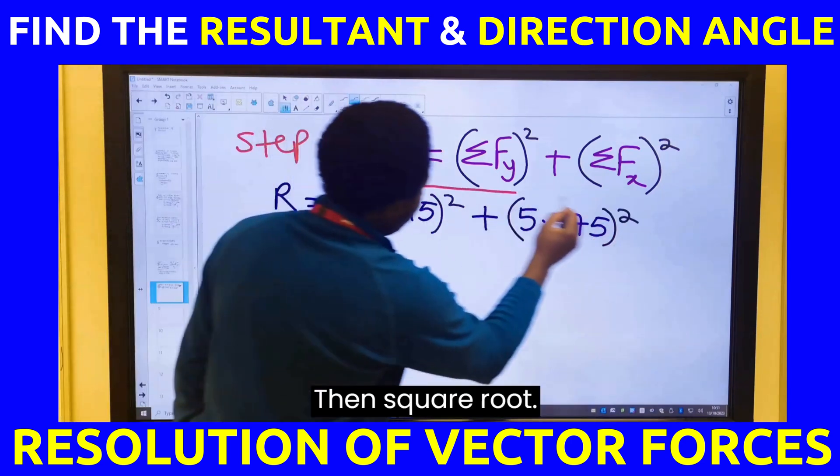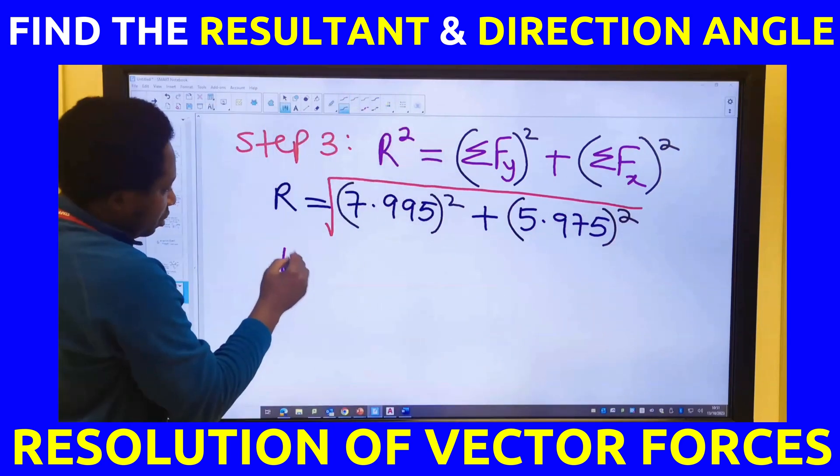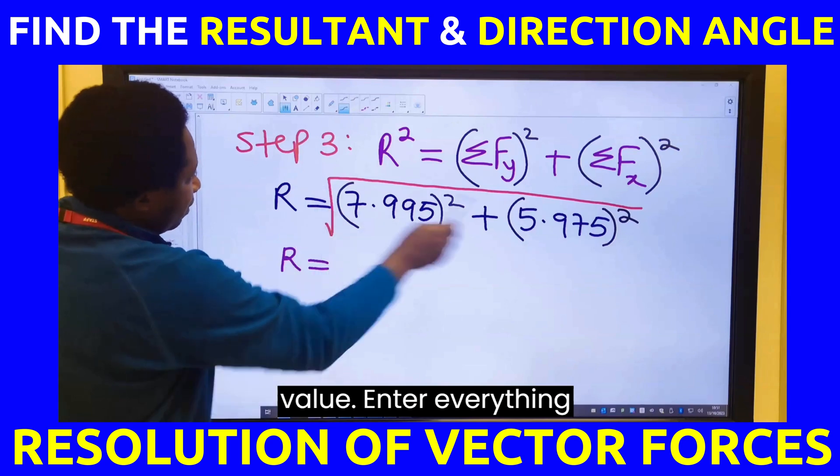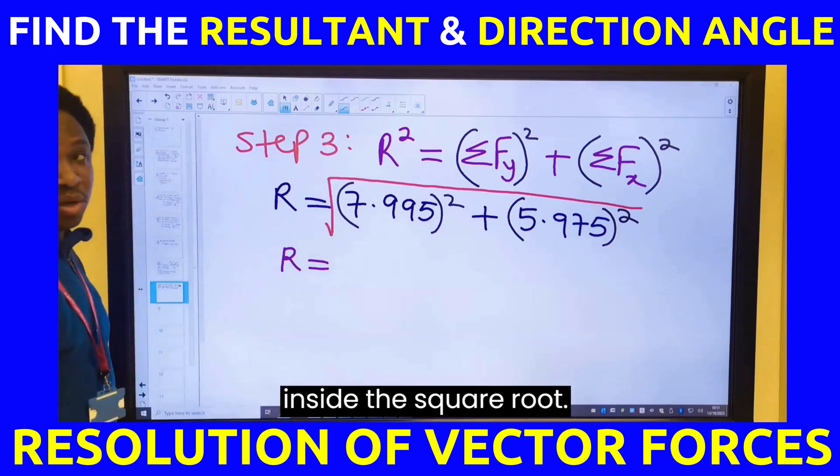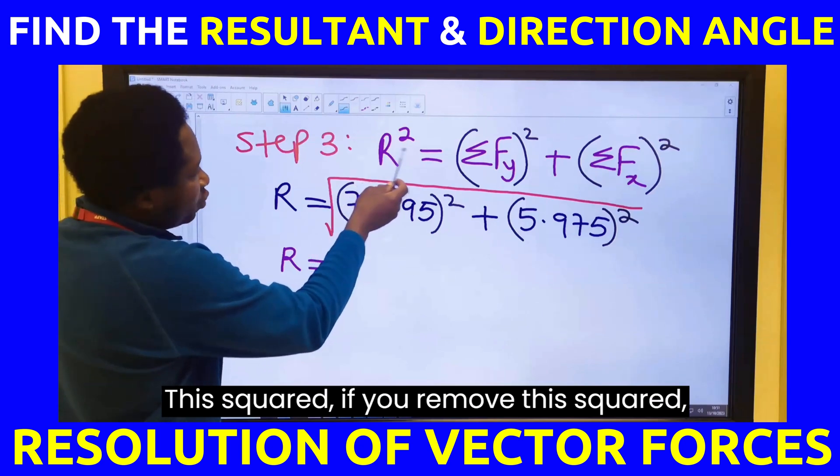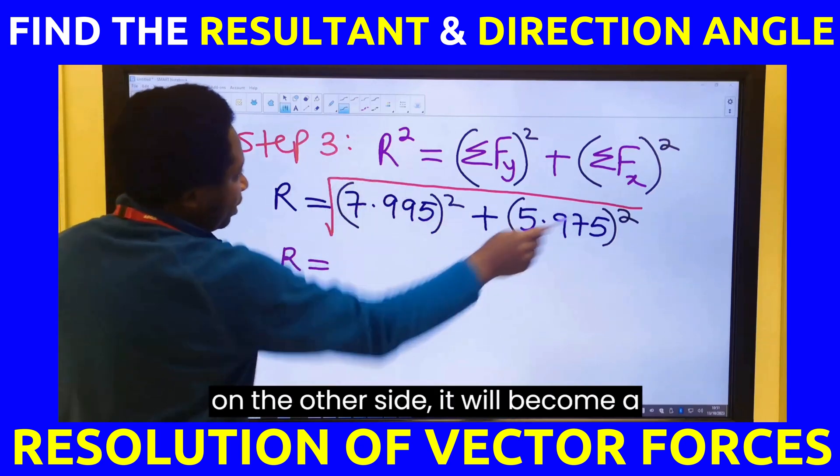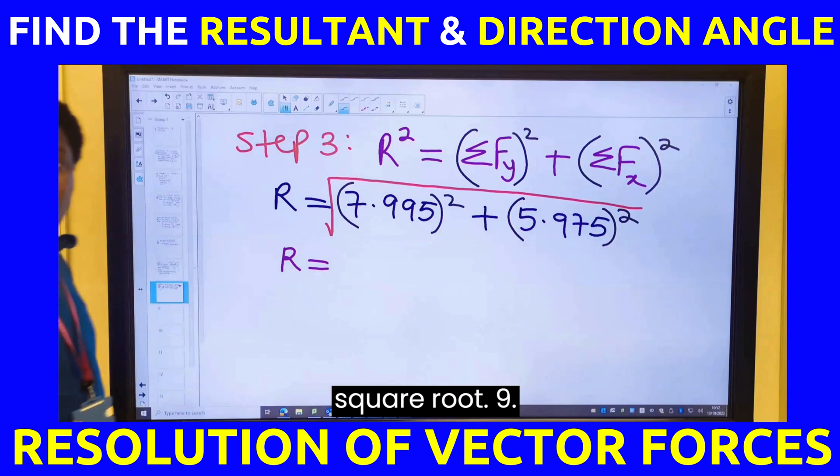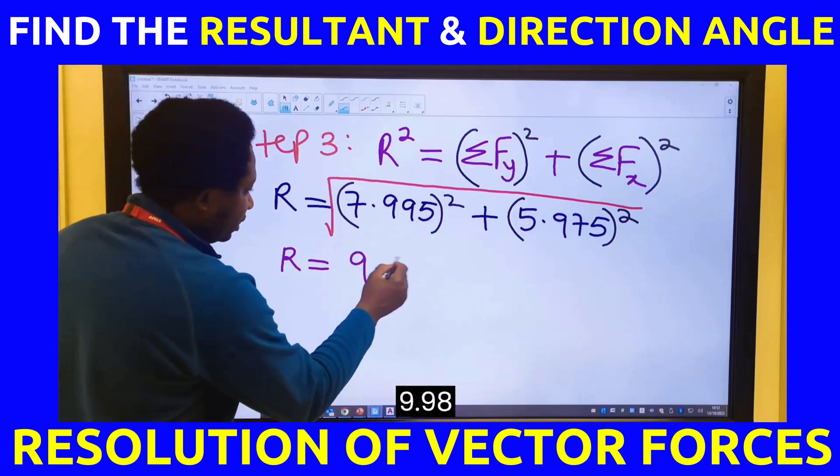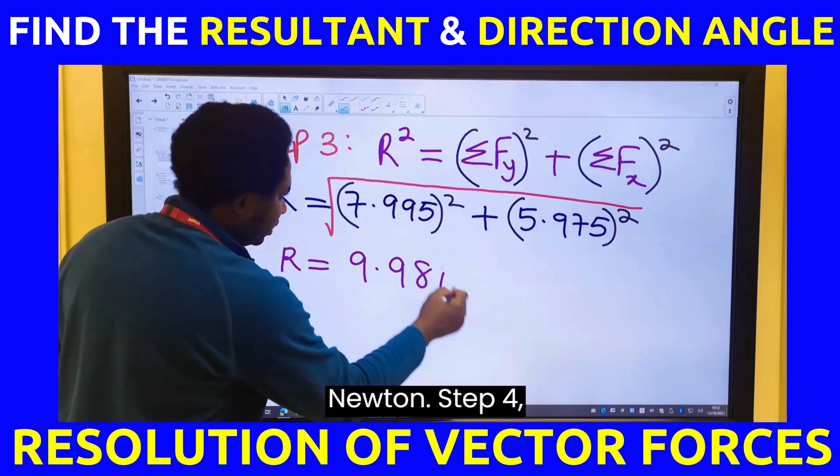Then, square root. Use your calculator to tell me the value. Enter everything inside the square root. If you remove this square root on the other side, it will become a square root. 9.98 newtons.